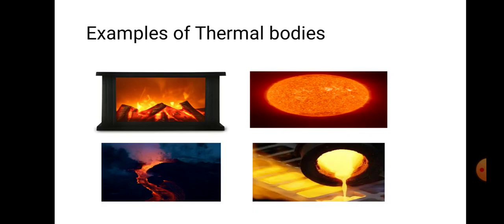Here are some examples of thermal bodies. The Sun is a thermal body that emits radiation. Volcanic eruptions also emit radiation. In all these cases, you can observe the radiations emitting out and differentiate the color and the maximum intensity radiation.